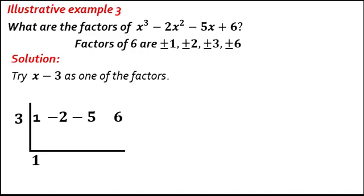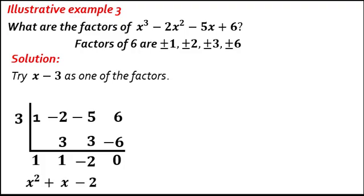1 times 3 equals 3. Negative 2 plus 3 equals 1. 1 times 3 equals 3. Negative 5 plus 3 equals negative 2. Negative 2 multiplied by 3 equals negative 6. 6 minus 6 equals 0. The remainder is 0, so x minus 3 is a factor of x cubed minus 2x squared minus 5x plus 6. The quotient is x squared plus x minus 2.